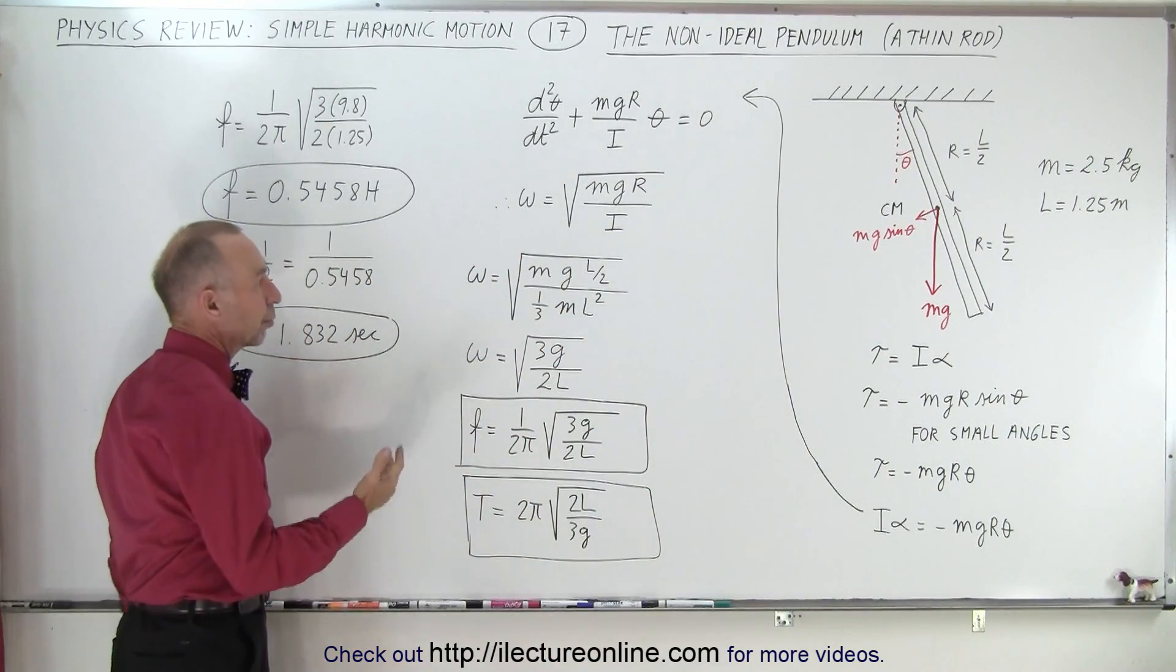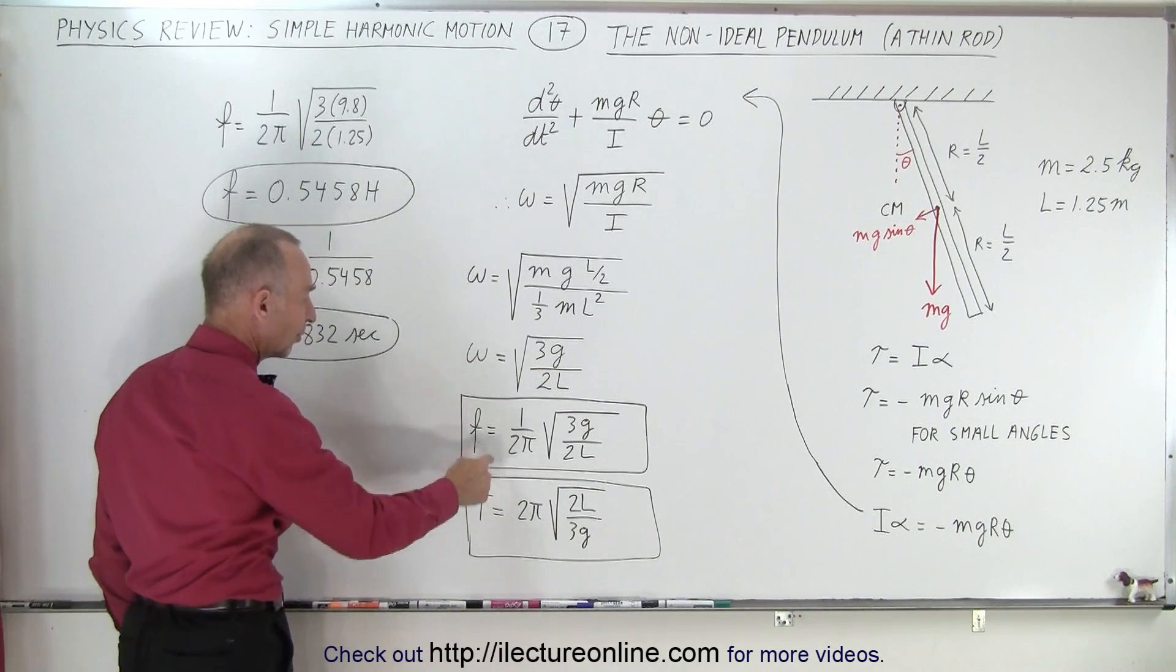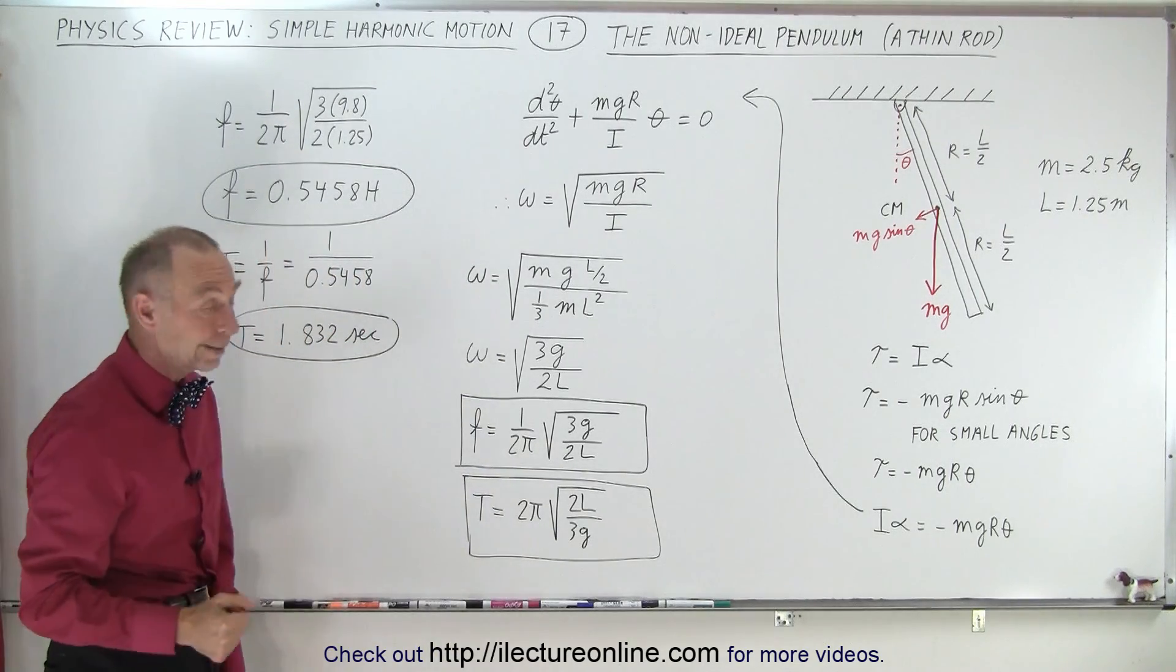So, for a thin rod, the moment of inertia is one-third ml squared. When we solve that for the frequency and the period, notice that the period is inverse of the frequency. These are the two equations that you get.